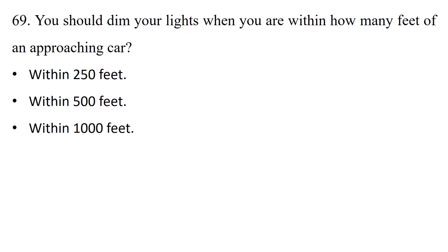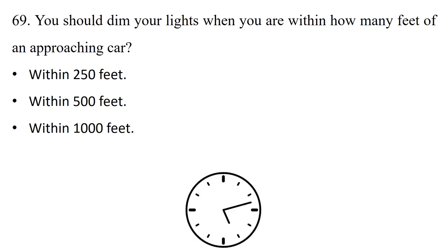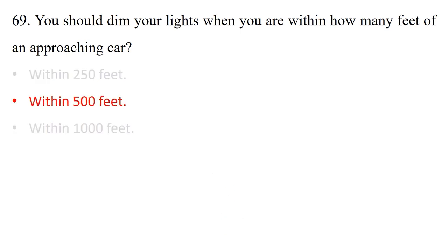Question: You should dim your lights when you are within how many feet of an approaching car? Option 1: Within 250 feet. Option 2: Within 500 feet. Option 3: Within 1,000 feet. The answer is option 2: within 500 feet.